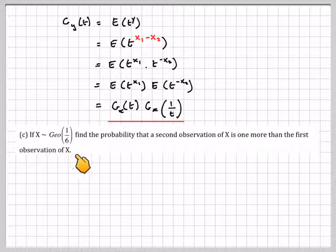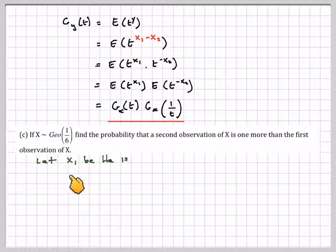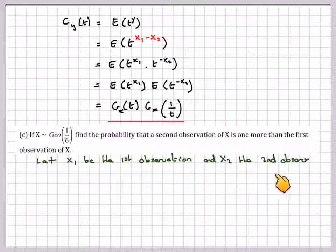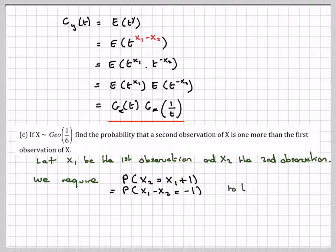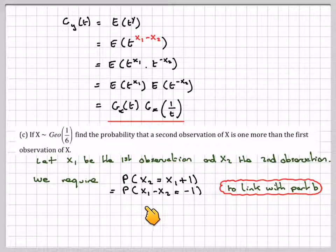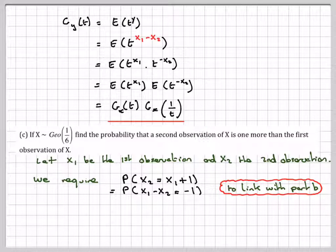If X is Geometric(1/6), find the probability that the second observation is one more than the first observation of X. Let X1 be the first observation and X2 be the second. We require P(X2 = X1 + 1), which rearranges to P(X1 - X2 = -1), linking with the result above.